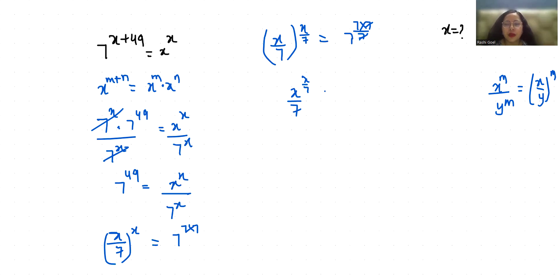Now if we compare both sides, x by 7 equals 7. Now I am going to multiply with 7 both sides to isolate x, so x equals 7 times 7 which is 49.